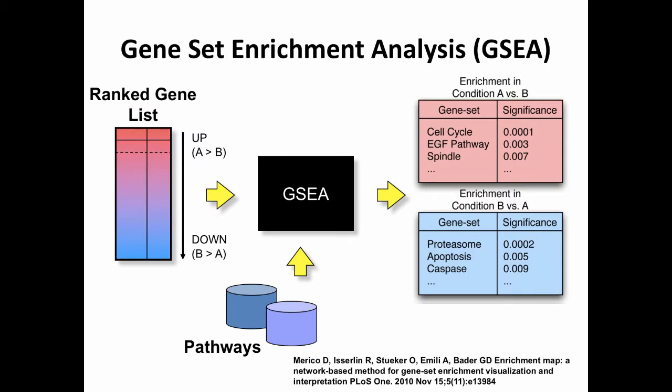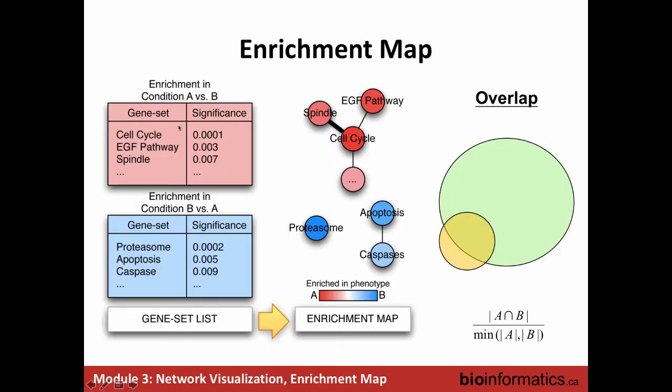As you learned this morning, you can use GSEA to get pathways enriched in condition A versus B and B versus A - the up-regulated and down-regulated genes. What an enrichment map does is it takes each gene set or pathway and visualizes it as a node or circle. The size of the circle is proportional to the number of genes in the gene set or pathway.